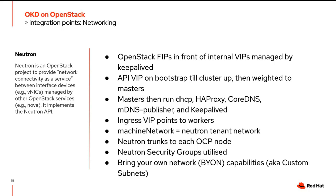There's an API VIP on the bootstrap until the cluster is up, then it's weighted back to the masters. Those VIPs must be established in DNS prior to installation. The masters run DHCP, HAProxy, CoreDNS, the CoreDNS plugin, the mDNS publisher, and keepalived. The ingress VIP is assigned to the workers, fronted by a floating IP which we currently assign manually. The machine network is the Neutron tenant network — you can change it to a different CIDR or network ID if needed.